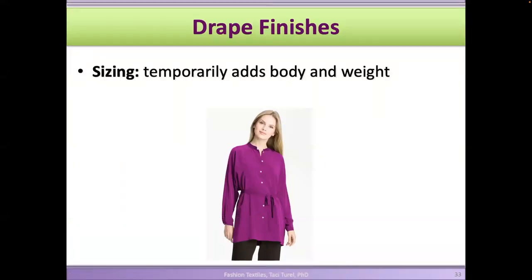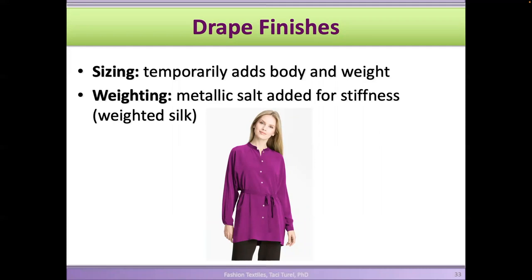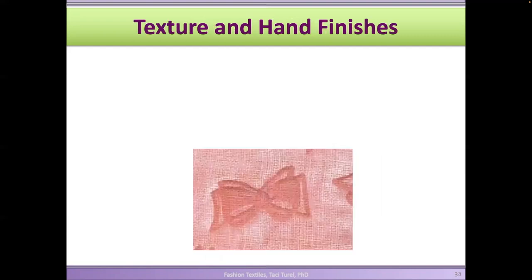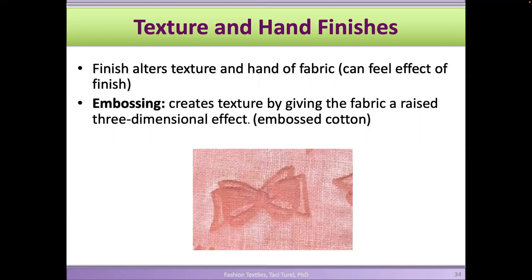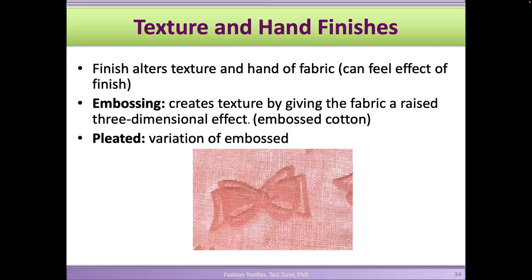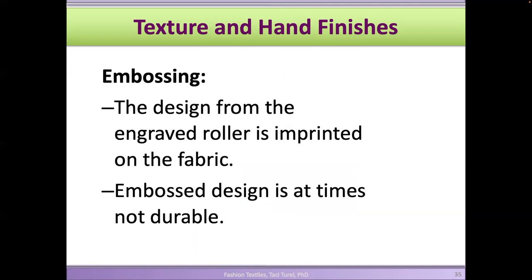Sizing can temporarily add body and weight to fabric and change the drape. Weighing is a finish done especially on silk for stiffness — adding metallic salts. Texture finishes include embossing, which also changes luster. Pleating finish pleats the fabric and heat sets it in that configuration to create a permanent pleated look.